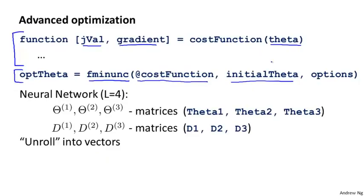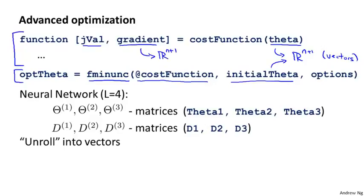Both these routines assume that theta and the initial value of theta are parameter vectors, maybe R^n or R^(n+1), but that these are vectors. It also assumes that your cost function will return as a second return value this gradient, which is also R^n or R^(n+1) — so also a vector.